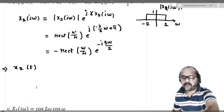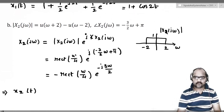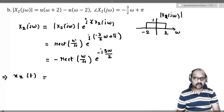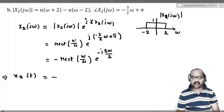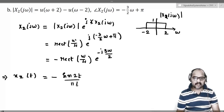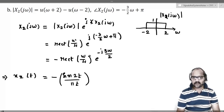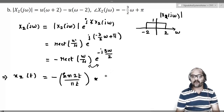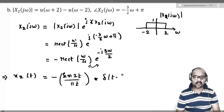What will be our x2(t)? x2(t) is the inverse Fourier transform of this function. We keep the minus. Which signal will have rect(ω/4) as the Fourier transform? That fellow will have sin(2t)/(πt) as the inverse Fourier transform — a rectangular function from −2 to +2 with amplitude 1, which is rect(ω/4). Note that these two Fourier transforms are multiplied, so in the time domain we should convolve. Which signal will have e^(−j(3/2)ω) as its Fourier transform? That is δ(t − 3/2).